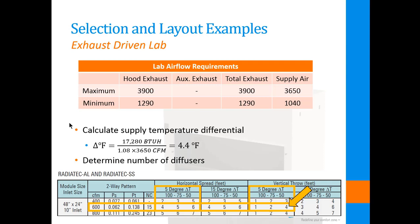We'll determine how many diffusers we need by looking at the performance tables for a dome radial diffuser. The first thing is to determine the selection that will keep velocities in the occupied space and in front of the hood below 50 feet per minute — half of the capture velocity for these hoods. If there is air motion in the vicinity of the open sashes in excess of the capture velocity, the hood may not be able to contain the contaminants. With 10-foot ceiling heights, throws to 50 feet per minute must be 4 feet or less.